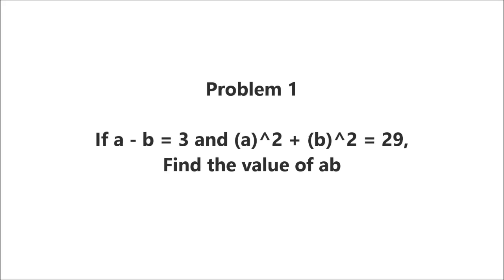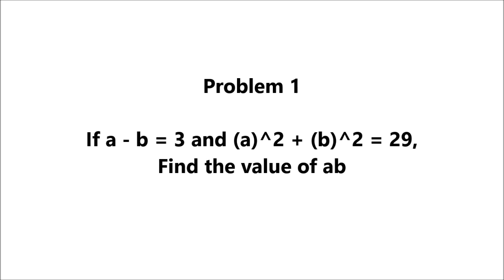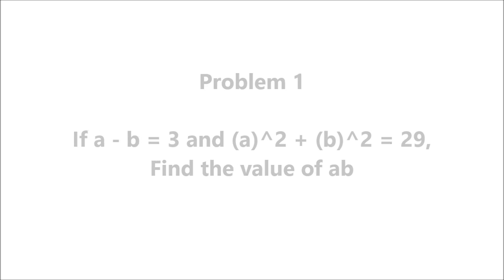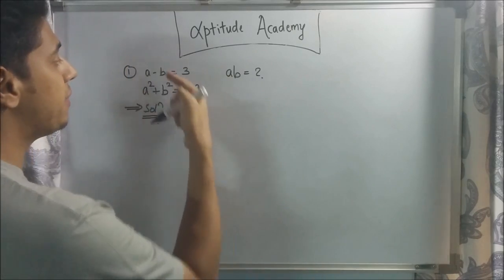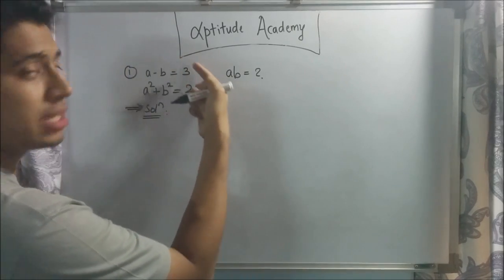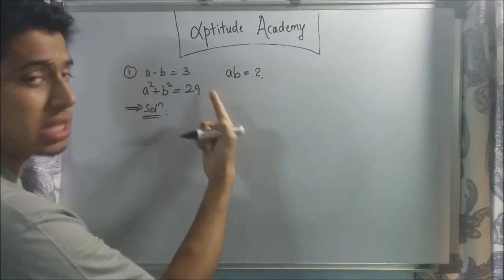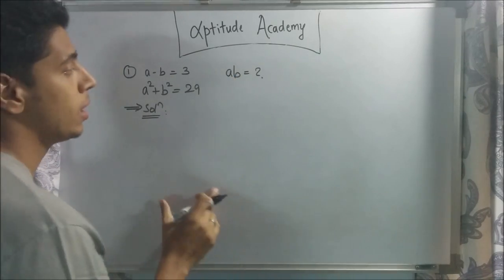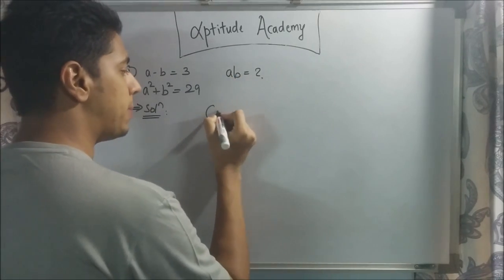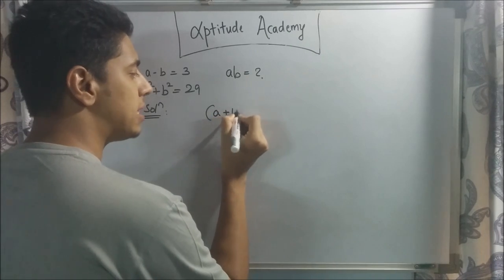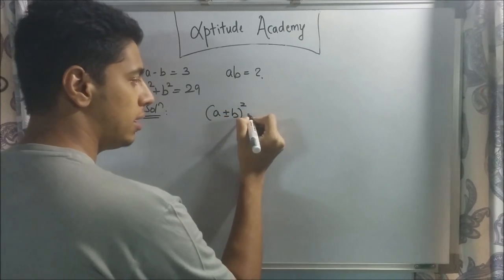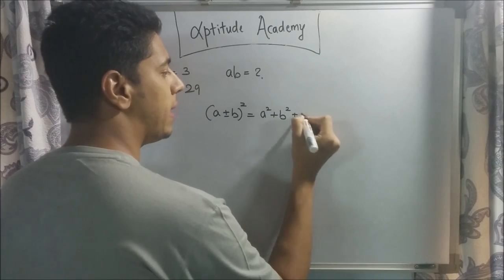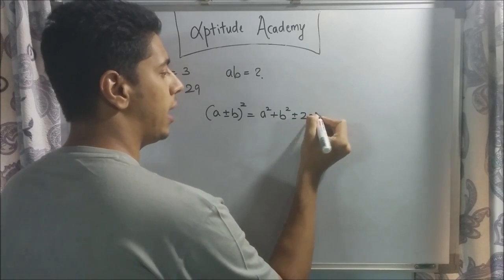If a-b is equal to 3 and a-squared plus b-squared is equal to 29, find the value of 2ab. Now to solve this sum, you need to know the property: (a ± b)² = a² + b² ± 2ab.